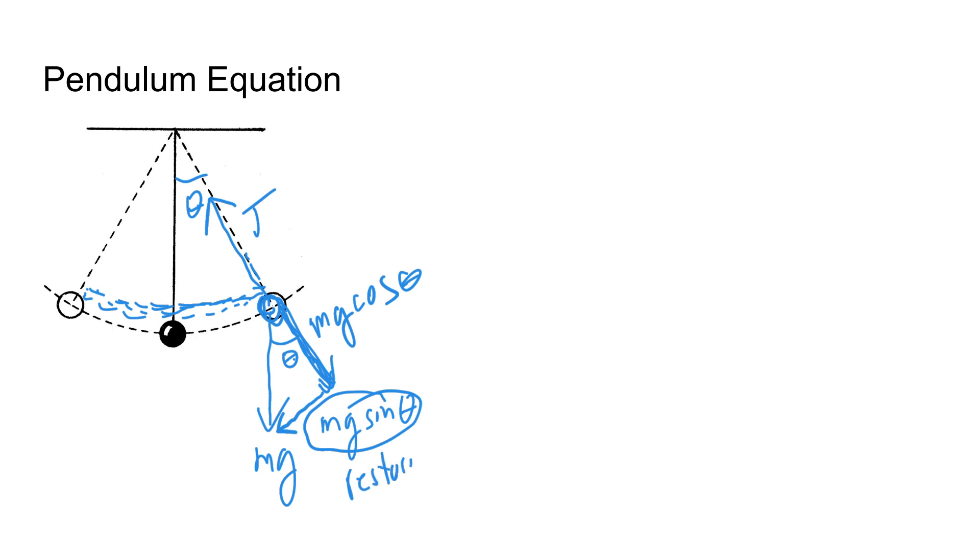So mg cosine theta kind of keeps the string taut, and then mg sine theta, this is what we'd call the restoring force. This is the force that actually causes the pendulum to move. And as it starts to go down that restoring force is going to decrease as the angle is decreasing, and then as you go in the other direction it's going to start pulling it backwards, slowing it down until it reaches this peak, and then it's going to continue moving back and forth. That's simple harmonic motion.